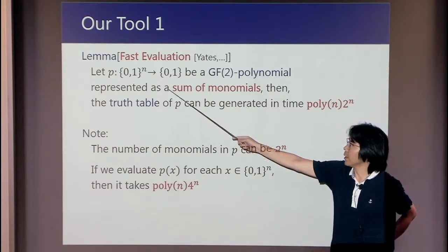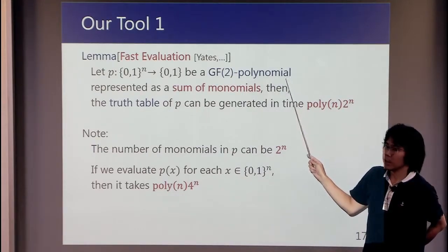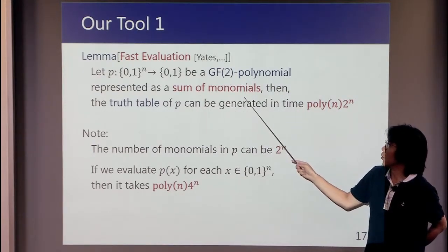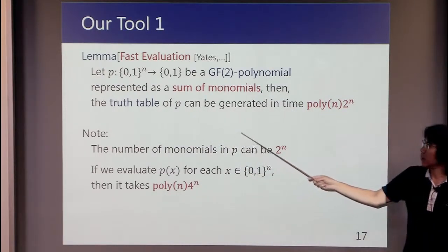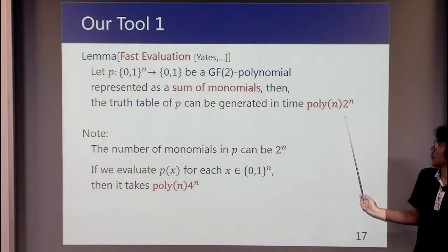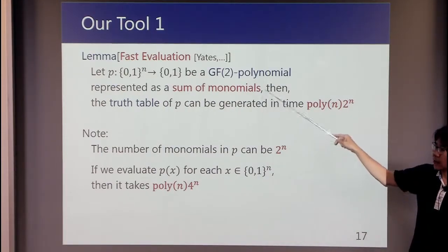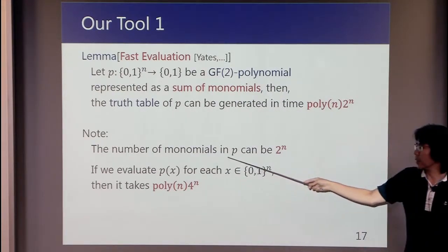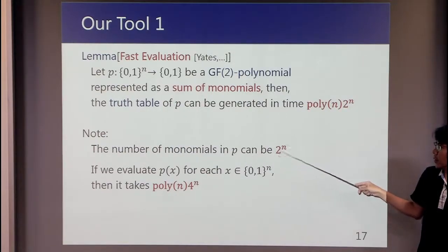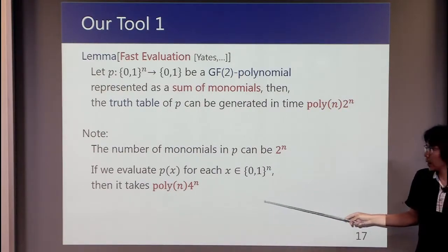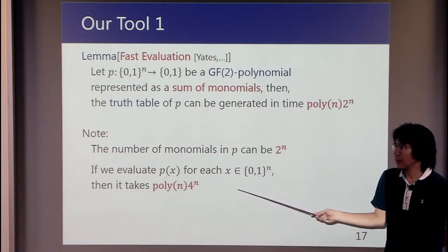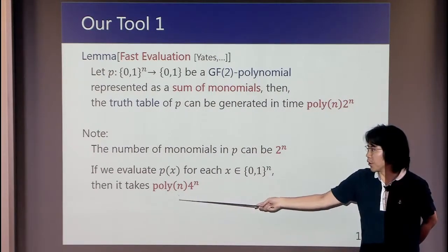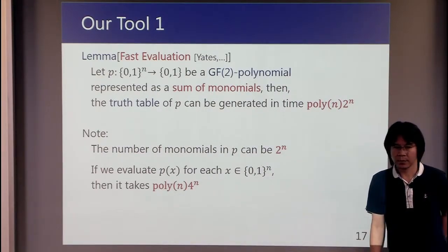This is our tool number 1. Here, let P be a GF[2] polynomial represented as a sum of monomials. Then the truth table of P can be generated in time poly(n)×2^n. This result is non-trivial because the number of monomials in P can be 2^n. So if we evaluate P(x) for each x, then it takes poly(n)×4^n.